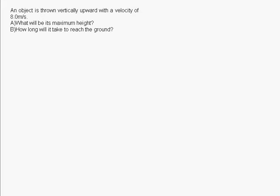Today I'm going to show you how to solve a problem in one dimension involving acceleration. One dimension means we're going just right and left, or up and down, or any direction as long as it's only in one dimension. This is an example of what we call non-uniform motion.